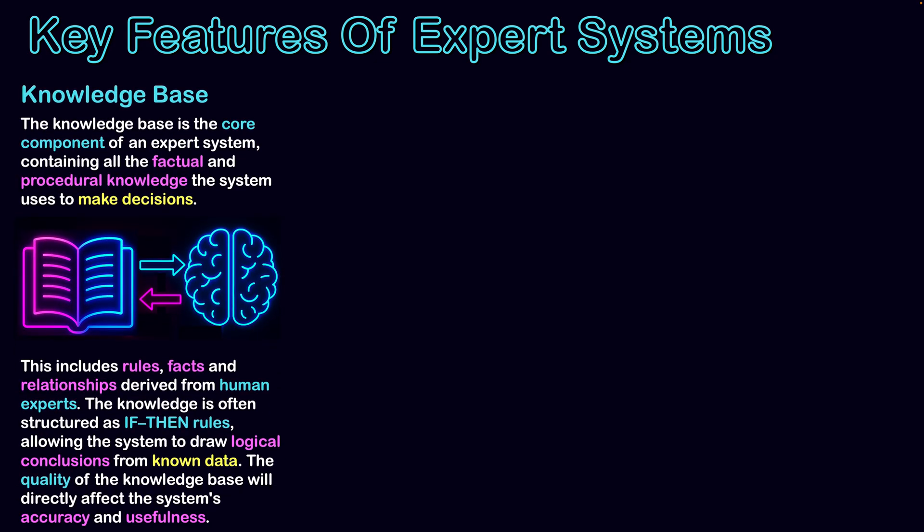The key features of expert systems — what are the foundations that make up these systems so they can not only act as an expert but support us with our tasks. The first category is the knowledge base, which is the core component of an expert system containing all the factual and procedural knowledge the system uses to make decisions. It's all the facts it needs to know, all the information, as well as the rules and algorithms needed to make a decision based on user-provided data. This includes rules, facts, and relationships derived from human experts — all stored in the system.